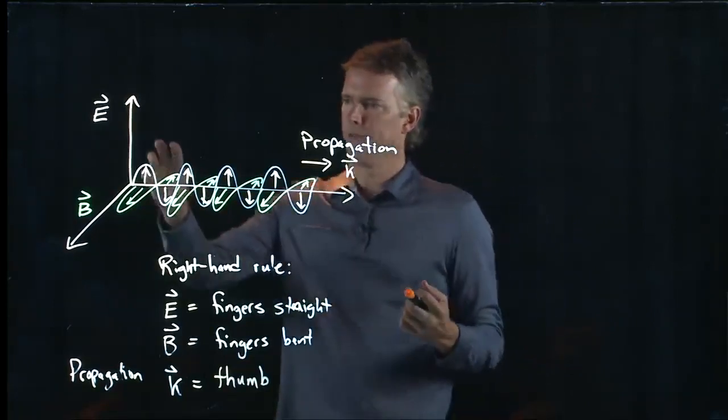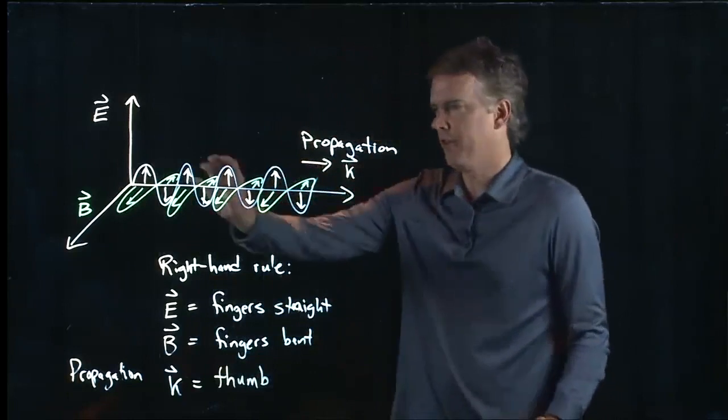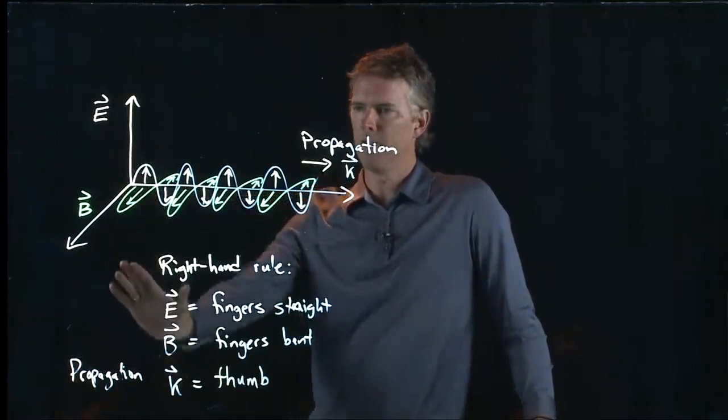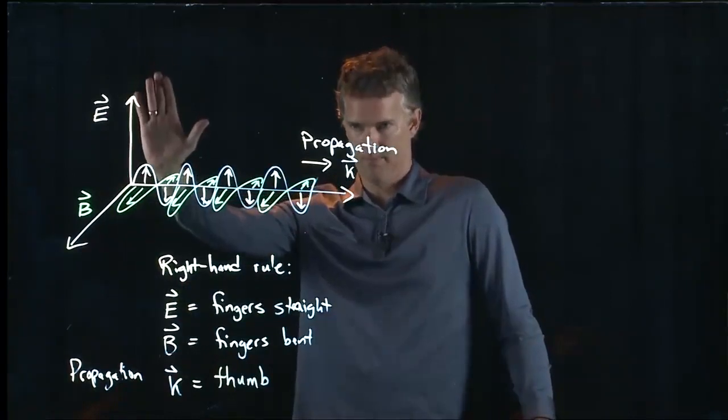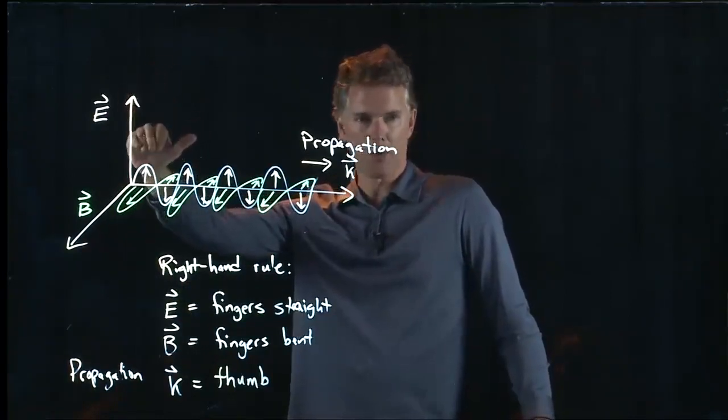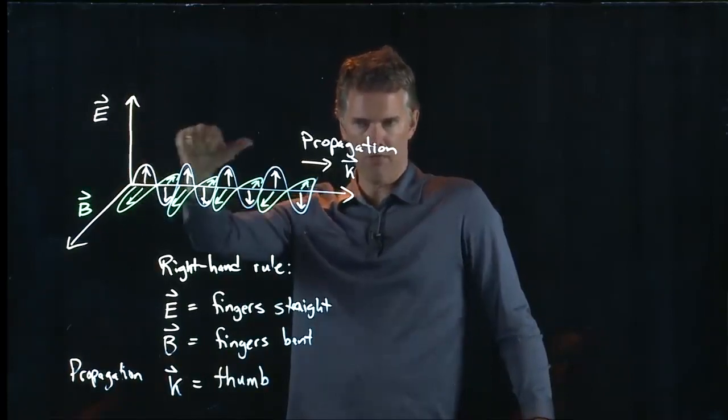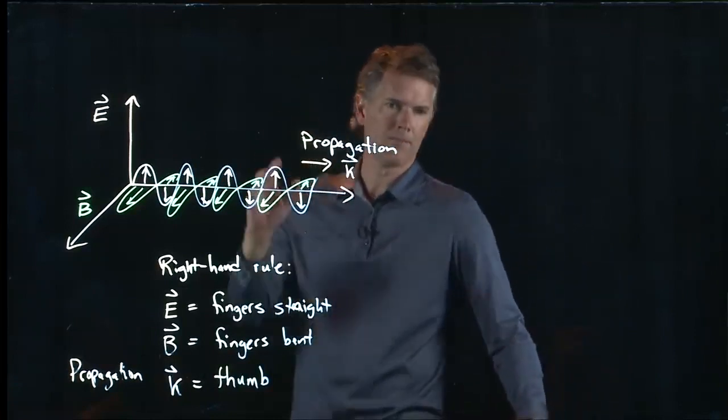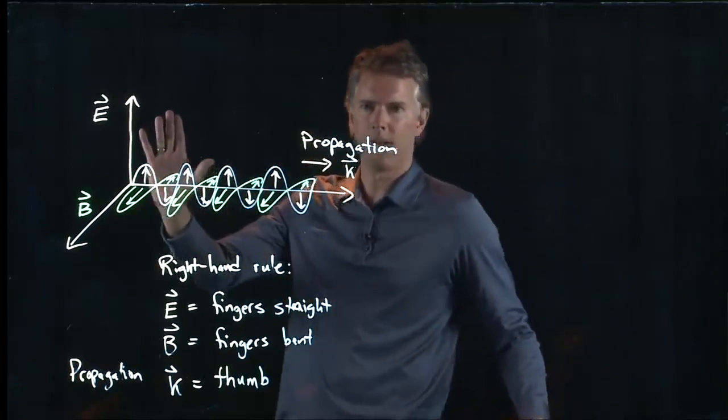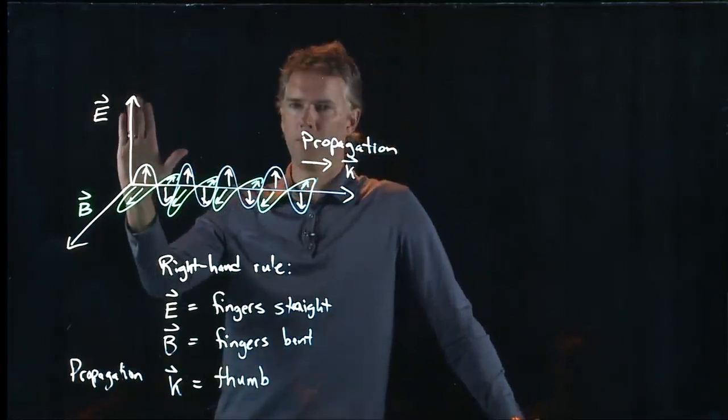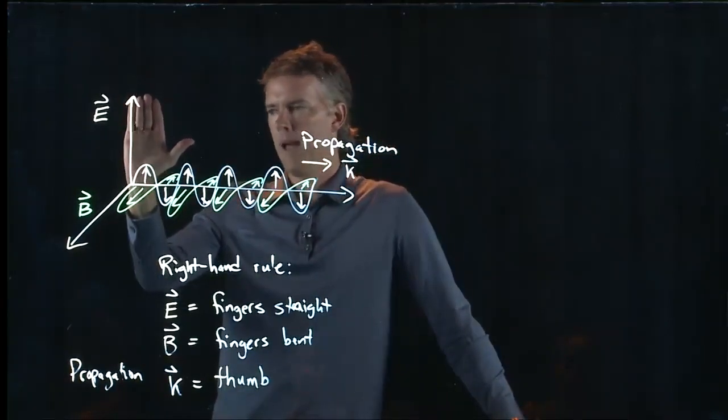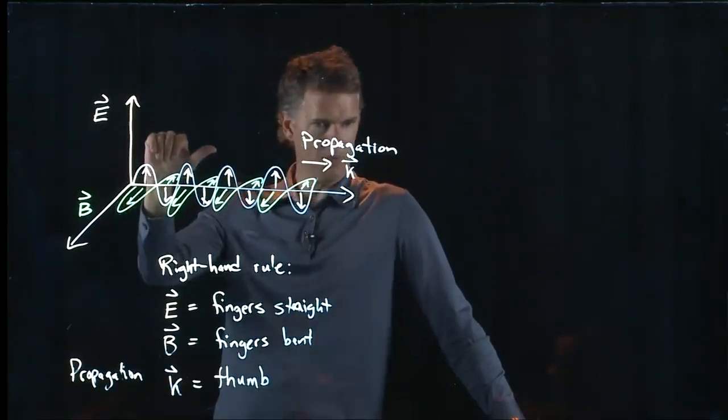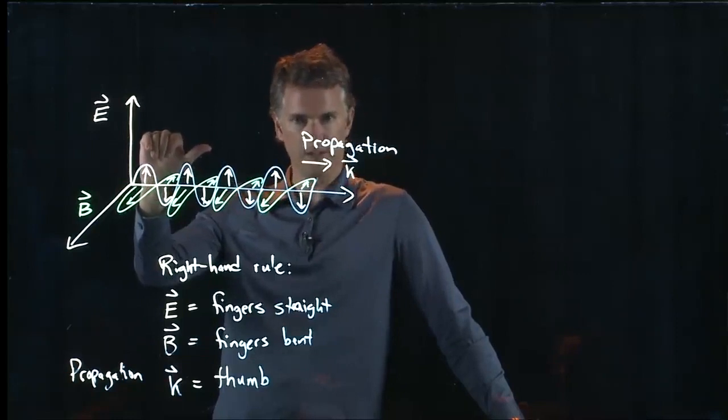So let's try that with this picture and see if we can convince ourselves that it is true. And let's look at the first instant of time. In the first section of this wave, I have an E field that is pointing up. I have a B field that is coming out of the page. And therefore my thumb gets me the direction of K. So everybody look at the computer monitor. Hold up your right hand. And try that. Put your fingers straight up in the direction of E. And now bend your fingers in the direction of B. Your thumb should be pointing in the direction of K. Is that what everybody is seeing?